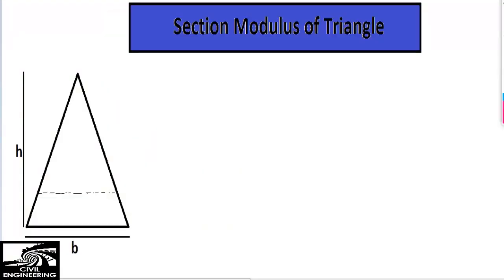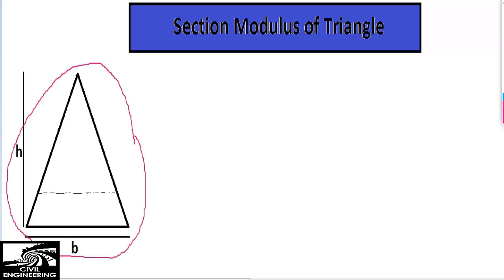Hello guys, today in this lecture we are going to talk about the section modulus of a triangle. As we see on the left side of the page, this is the triangle given to us with the dimension denoted by b, the width of the triangle, and where the height of the triangle is represented by h.